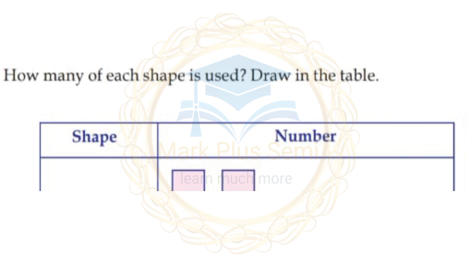Counting the shapes: squares — 4, 5, 6, 7, 8, 9 — there are 9 squares. Now write the numbers.